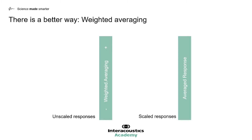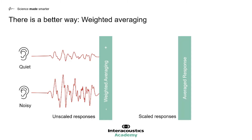In weighted averaging techniques, we accept that during a test there are going to be conditions where there are low levels of noise and high levels of noise. In this example we can see two stages of the test where the noise is different. However, embedded in the noise is the OAE response, and this within the same patient should remain constant.